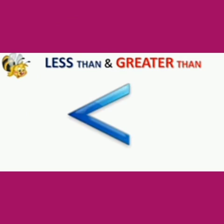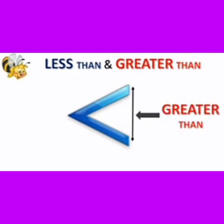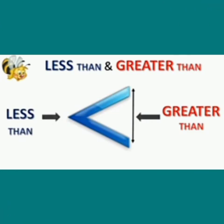Let's understand the concept of less than and greater than. Consider the given picture. Here, the wide open mouth represents greater than, and on the other side, the closed mouth represents less than. So this is about the less than and greater than symbols.